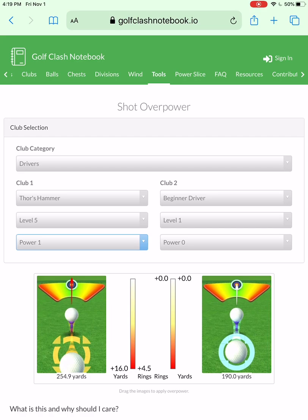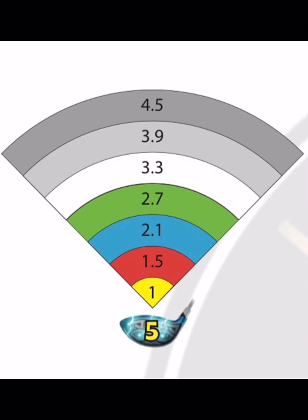Here we see a chart for the Thor's Hammer five. I'll be showing you how I came up with all of these numbers. There are seven rings total — total max OP is four and a half rings on the ground. Let's go to the first one.